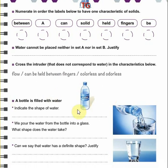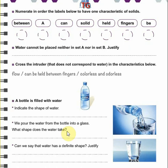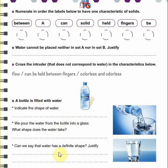A bottle is filled with water — we indicate the shape of water in this bottle. Then we pour the water from the bottle into a glass. What shape does the water take? We identify the shape of water in the glass. Finally, can we say that water has a definite shape? We need to justify.